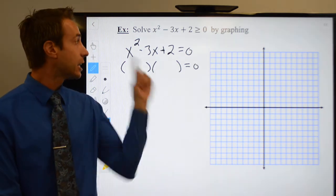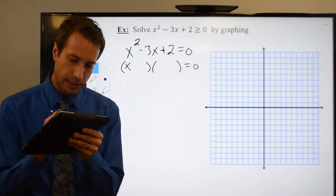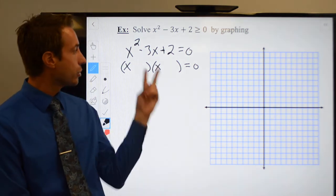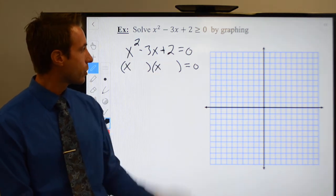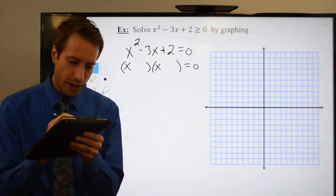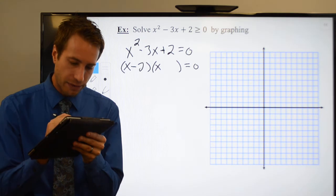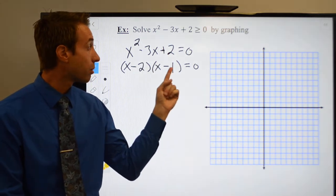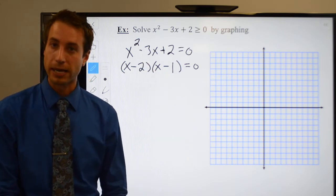Since my leading coefficient is 1, I'm going to need an x and an x. Then I need two numbers that multiply to positive 2 and sum to negative 3. I don't think it would take much figuring to come up with negative 2 and minus 1. Negative 2 times minus 1 would be positive 2, and negative 2 plus negative 1 would be minus 3.